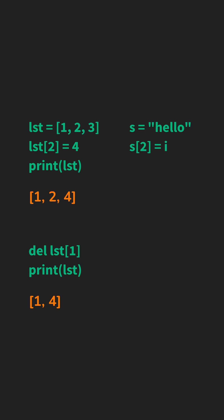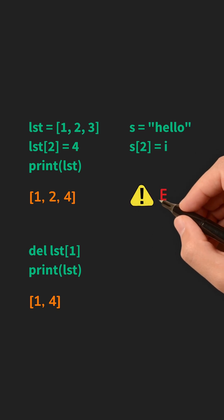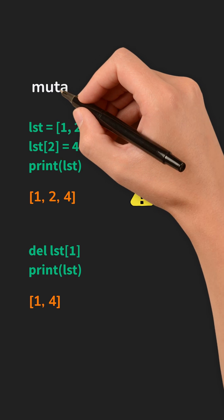But strings are immutable, so s[n] or del s[n] will always fail. You can't change a character in place.